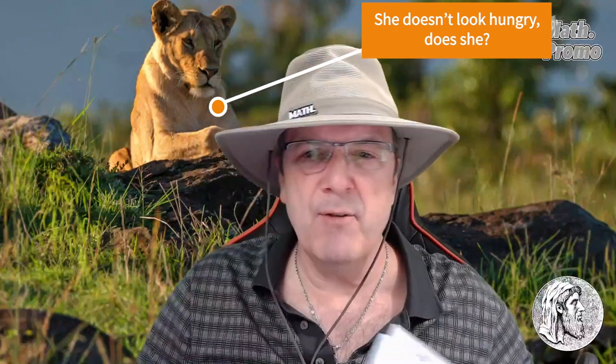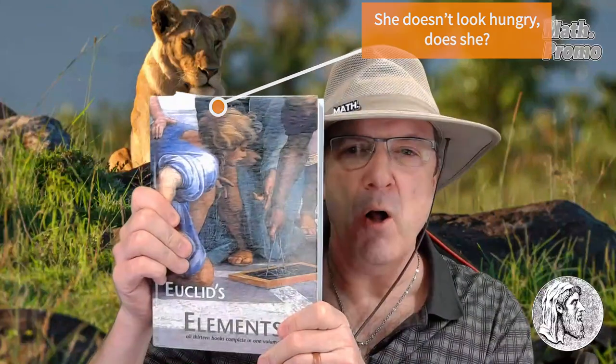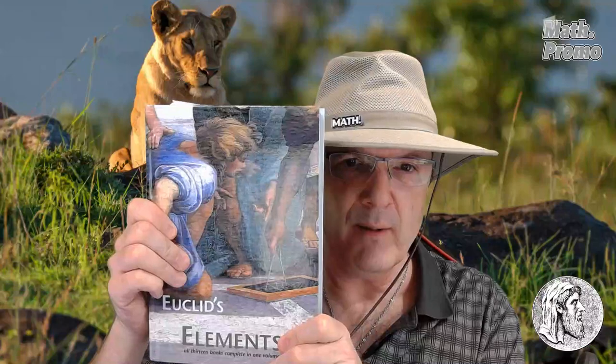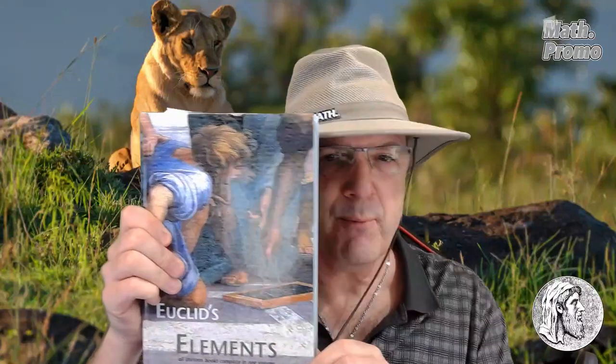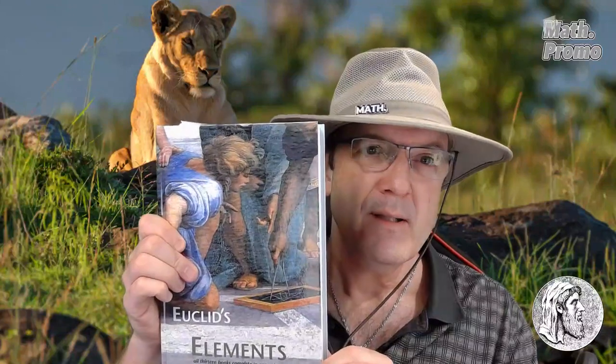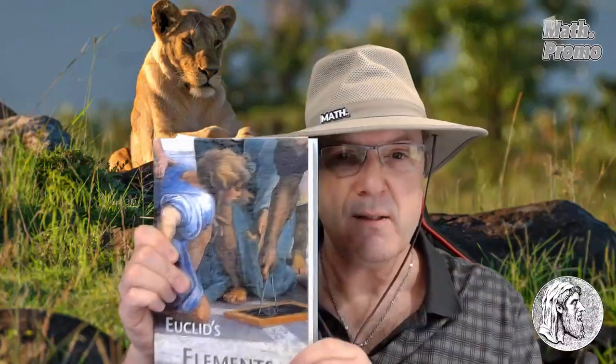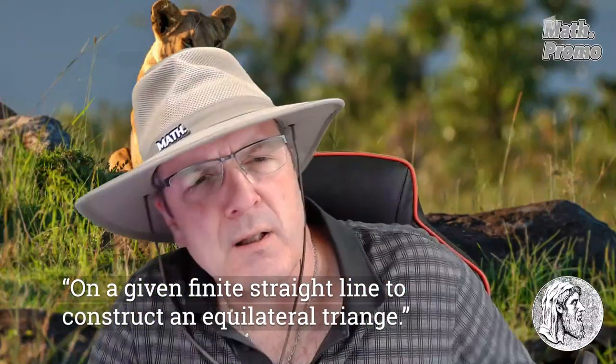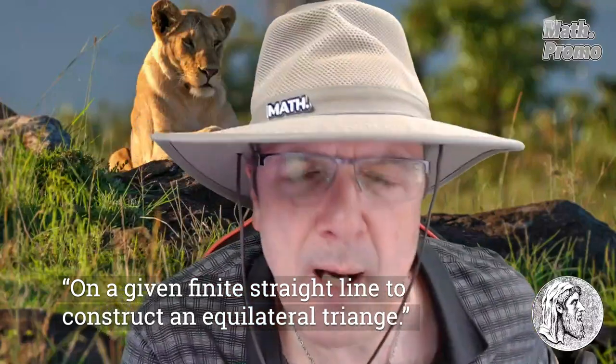Our map for every journey is Euclid's Elements, all 13 books in one volume, published by the Green Lion Press and used as a reference for these videos with permission. See the video's description for links. Today we search for the elusive Book 1, Proposition 1.